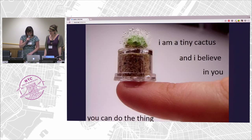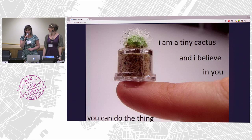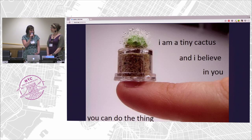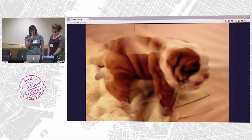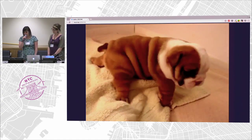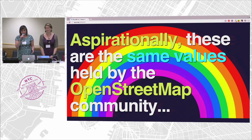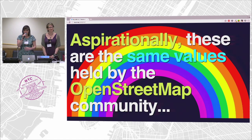Cute puppy. This is a slide I've put in several MapTime presentations — sometimes you think about ridiculous things and that makes you smile, and it makes you feel good to know the world is awesome and everything is great. You're doing the hard work by being here, listening, trying things out, and doing new things. Aspirationally, these values we're talking about are the same values the OpenStreetMap community has: accessibility, beginner-focused, hands-on, collaborative, and open source.